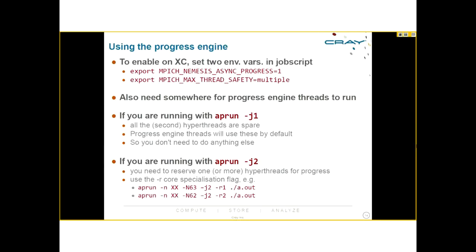To use the async progress engine on an XC system, set two environment variables: MPICH_GNI_ASYNC_PROGRESS=1 and MPICH_GNI_MAX_THREAD_SAFETY=multiple. You also need cores for the progress engine threads to run on. If you run with APRUN -j1, all second hyperthreads are spare and the progress engine threads will use them by default. If running with -j2, reserve one or more cores using the minus-R core specialization flag.